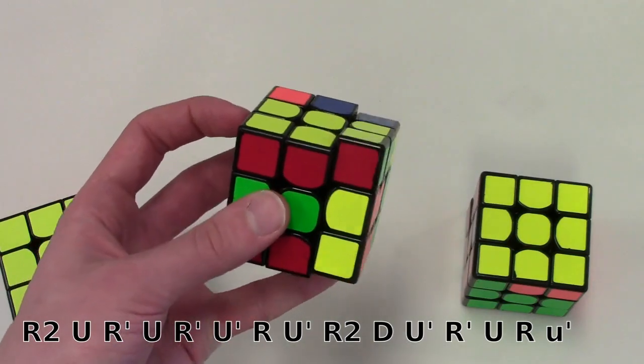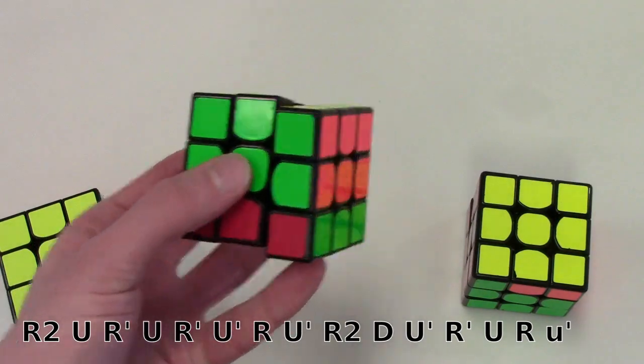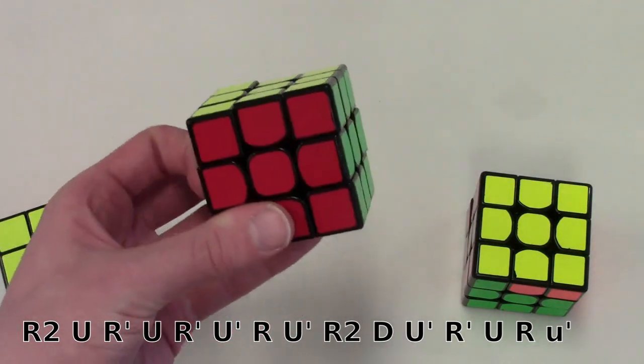Now I can do R' with my pinky here, U, R, and now for the final D' it's much easier just to do a fat U' like this.